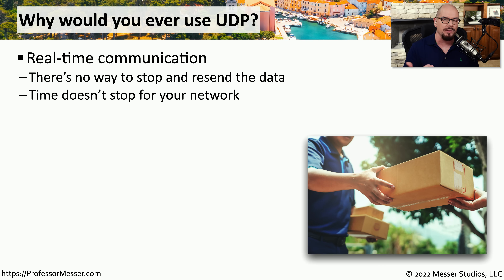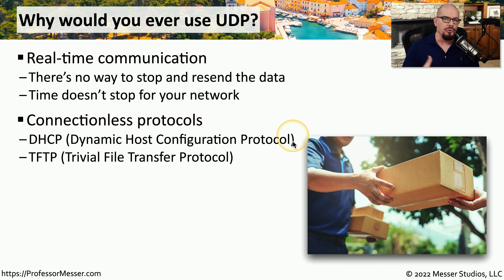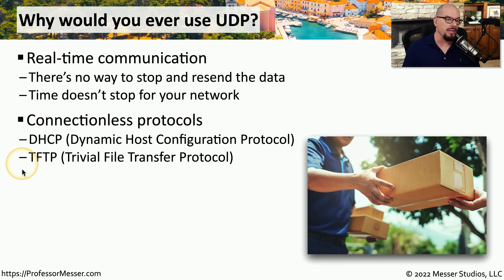UDP is most associated with real-time communication — communication where you can't stop, retransmit information, and then catch up with yourself. If you're on a phone call, there's no way to rewind the conversation and send a packet that may have been missed a second or two ago. With UDP, we simply send the data. If it makes it to the other side, we were successful; if the information was dropped along the way, we simply keep the conversation going. Examples of protocols that use this connectionless form include DHCP, the Dynamic Host Configuration Protocol, and TFTP, the Trivial File Transfer Protocol.